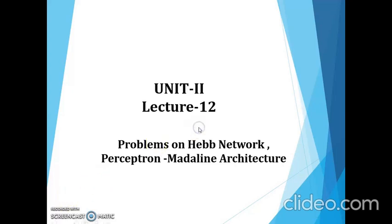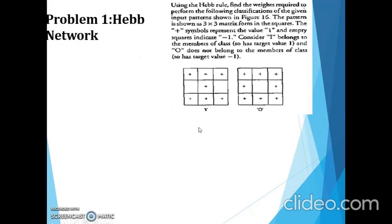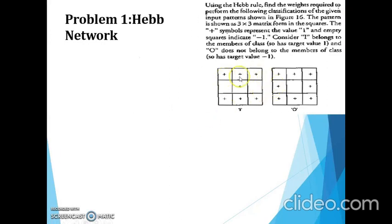Now we start with the Hebb neural network problem. We have two samples: the first sample has the value of 'i', the second sample has the value of 'o'. We want to recognize the 'i' value from the two samples, so the target value for the first sample is +1 (positive sample) and the target value for the second one is -1 (negative sample). Wherever data exists in the plus symbol, those locations represent the value of 1; the empty square represents the value of -1. Here we are considering bipolar input, so we have 1 and -1; if it were binary we would have 0 and 1.